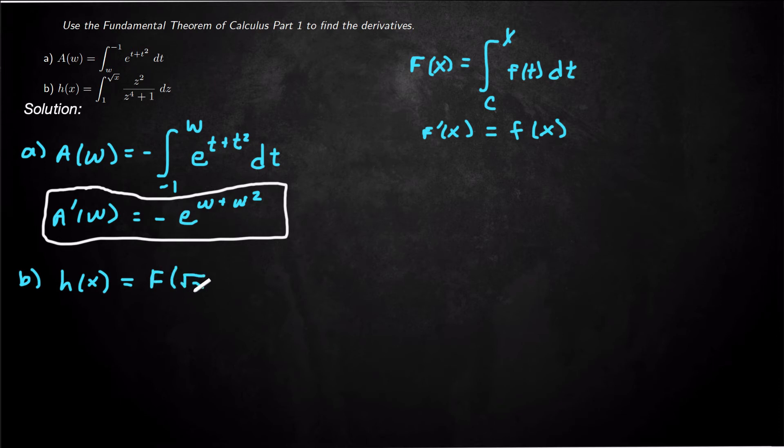Where capital F of x would have just been integral from 1 to x, z squared over z to the 4 plus 1, dz.